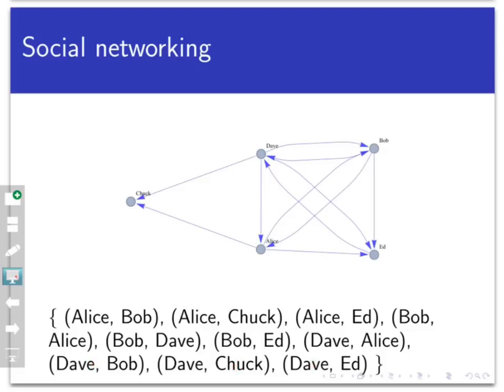If Bob one day decided to follow Chuck, then we'd just have to append the pair (Bob, Chuck) to the set. Or if Bob unfollowed Dave, we would have to remove the pair (Bob, Dave) from the set.